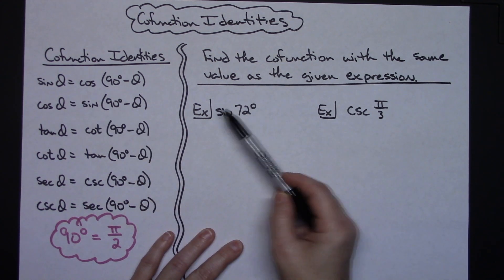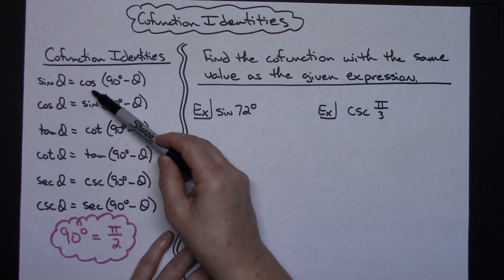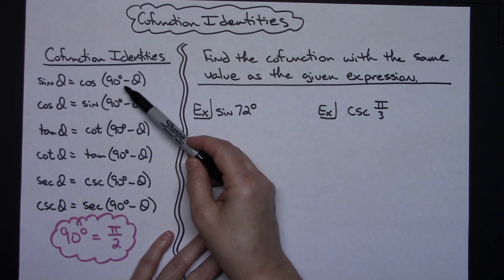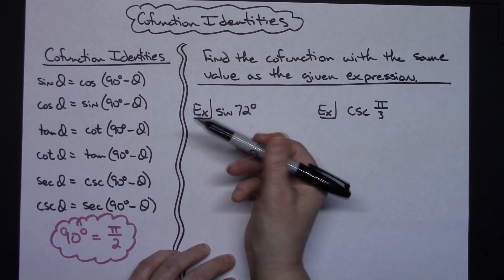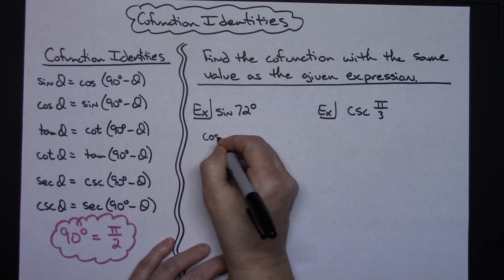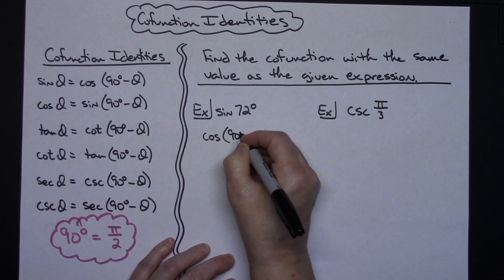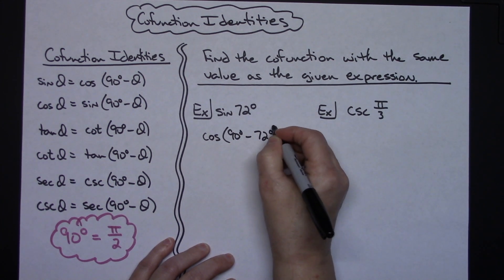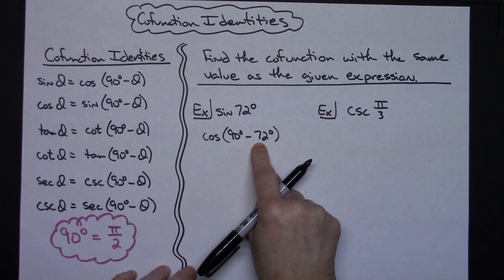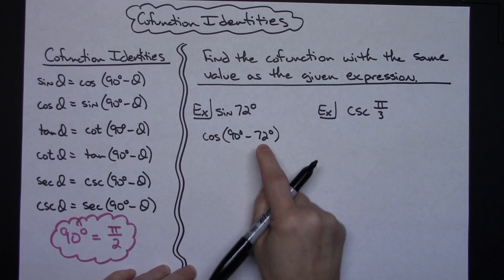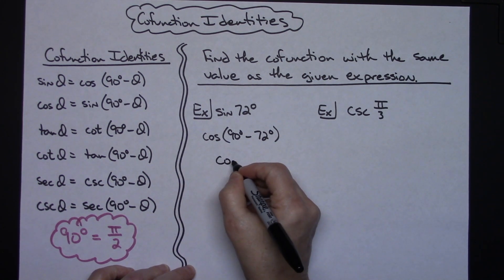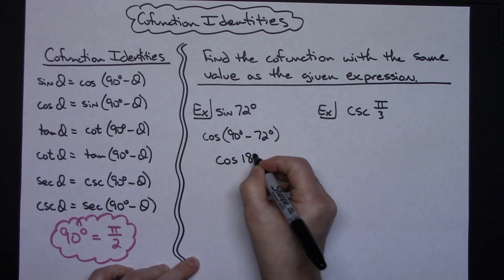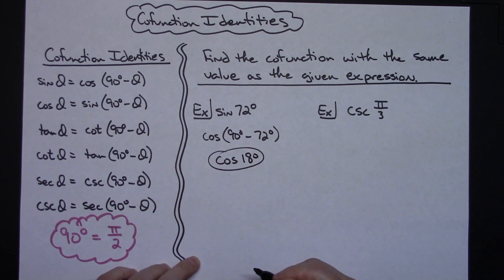The formula says if I'm trying to find sine of 72 then I can do cosine of 90 minus 72. So your line of work would be cosine of 90 degrees minus the 72 degrees. It's a matter of just subtracting that. 90 minus 72 is going to be 18. So cosine of 18 degrees is the cofunction that has the exact same value.